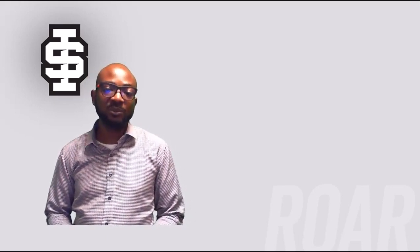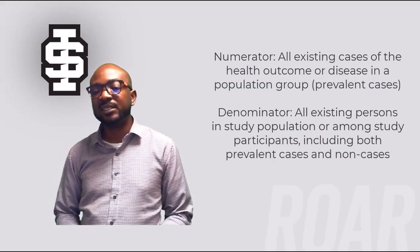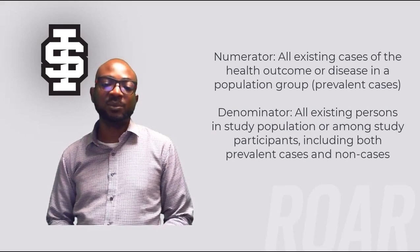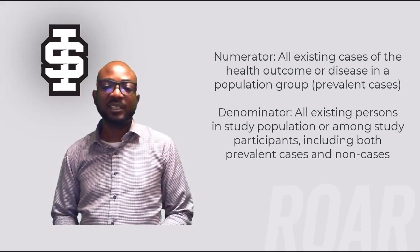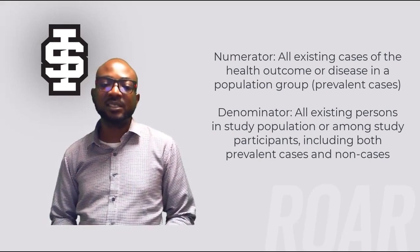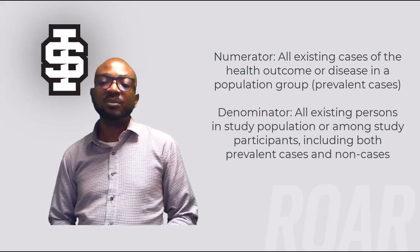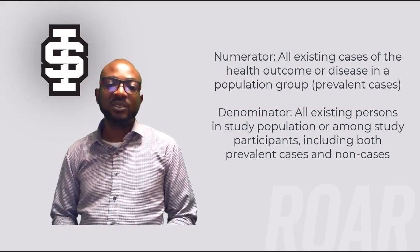Cross-sectional studies are often used to describe the occurrence of the health outcome or exposure in the population. The measure used to describe this occurrence is prevalence. For the numerator, you include all existing cases of the health outcome or disease in the population group — the prevalent cases. For the denominator, you include all existing persons in the study population, including both prevalent cases and non-cases.